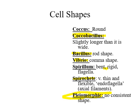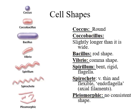Finally, pleomorphic means that the cells have no consistent shape. When you look at a pure sample of that bacteria, some of them are round, some are vibrio-shaped, some are bacilli-shaped, some coccobacilli — there's no constant shape. This is unfortunate because you might think you have a mixed culture of several different species when in fact there's only one species, which just happens to be pleomorphic.